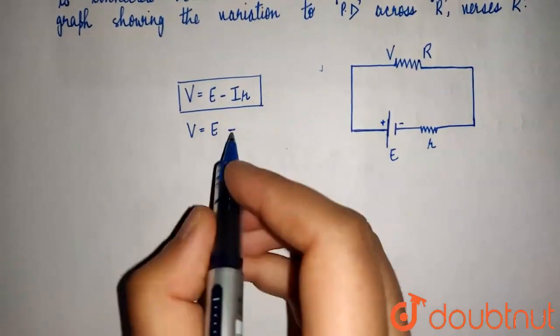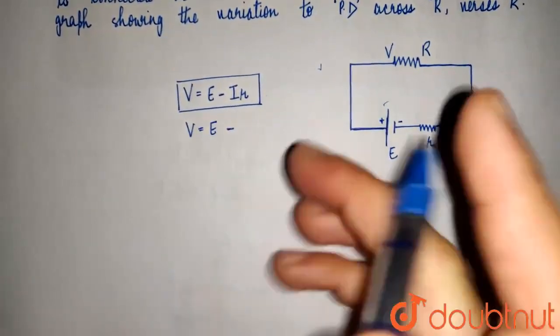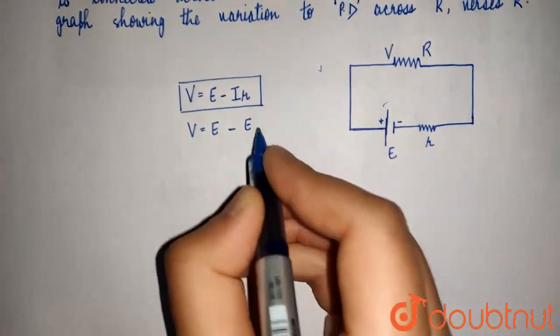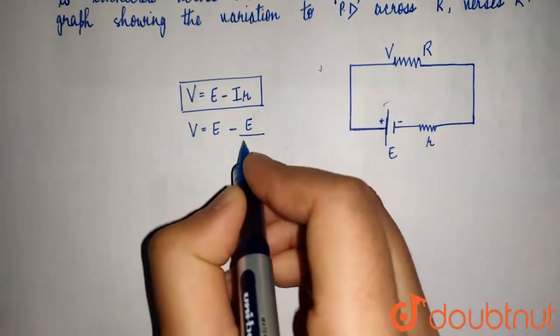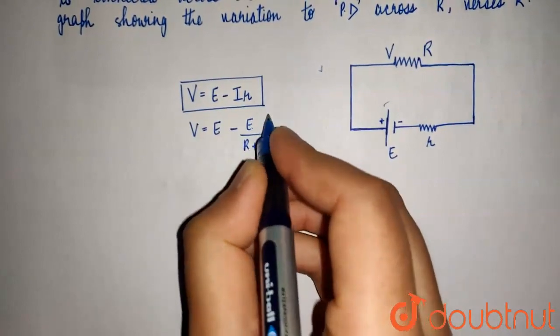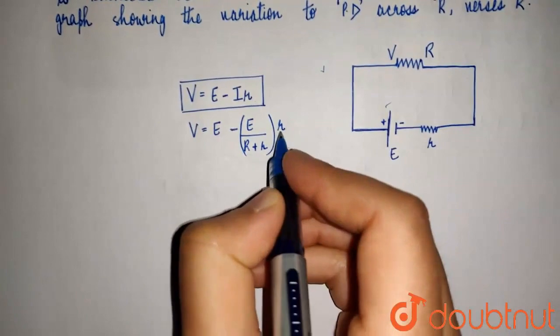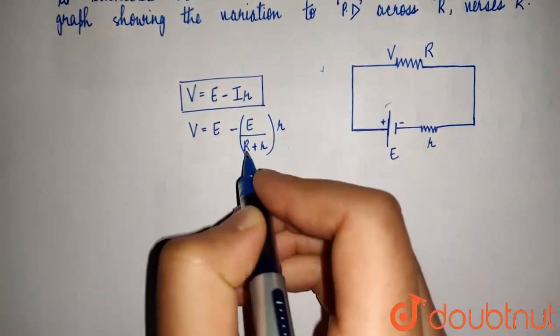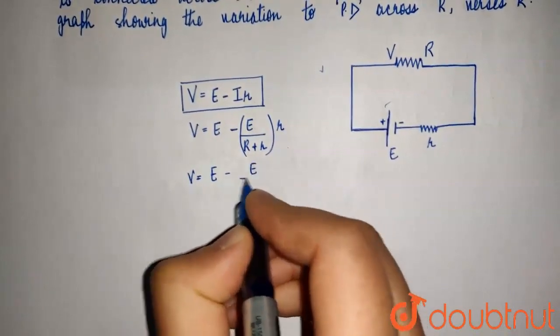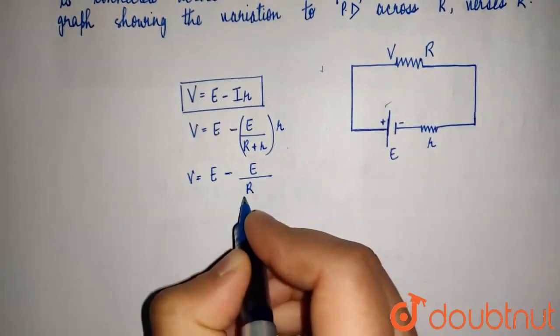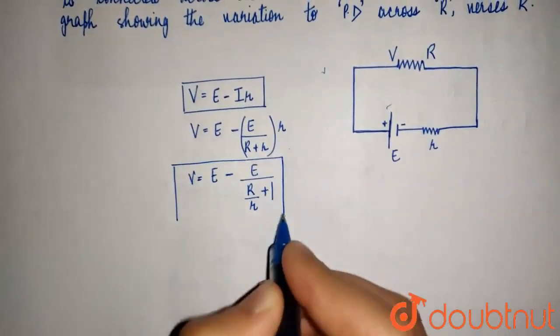So, the total current in this circuit will be given by EMF divided by the total resistance. That is R plus r. So, if we bring this r in the denominator, we'll have something like this. That is E divided by r by R plus 1. This is our final equation.